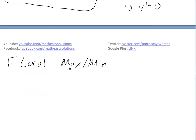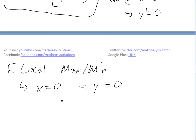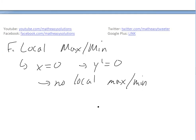For part F, local max and minimum: the only critical number is x = 0 where f′ = 0. However, since the function is increasing when x < 0 and also increasing when x > 0, the derivative doesn't change sign — there's no local max or minimum. The function just keeps increasing through that point.